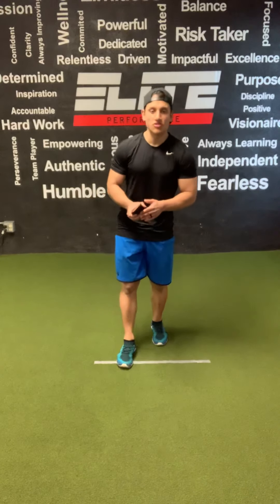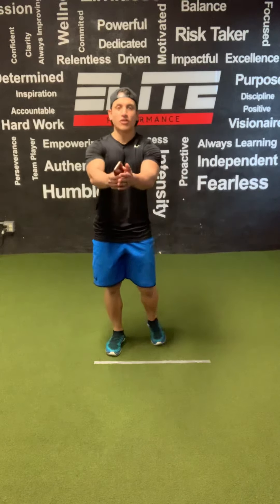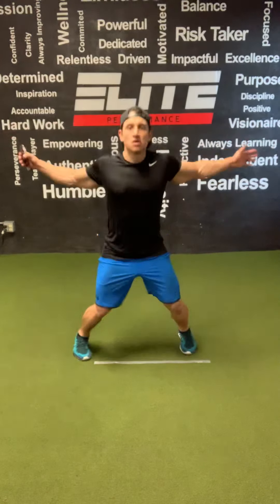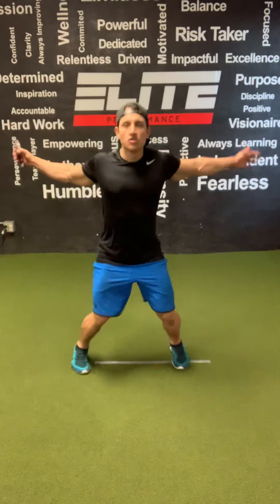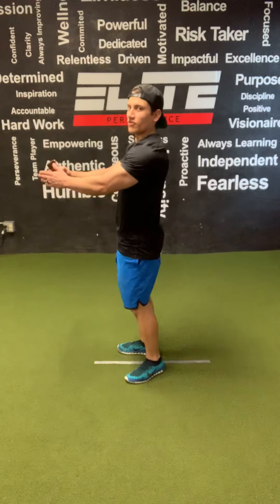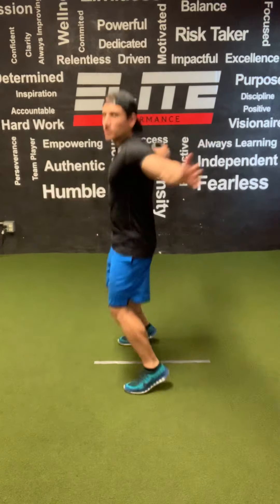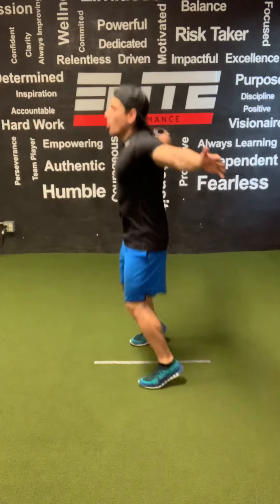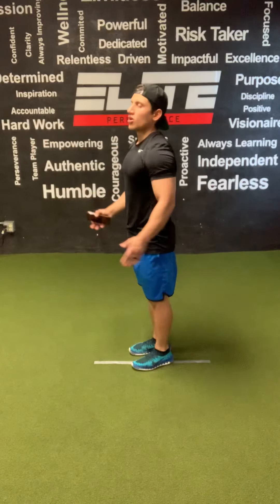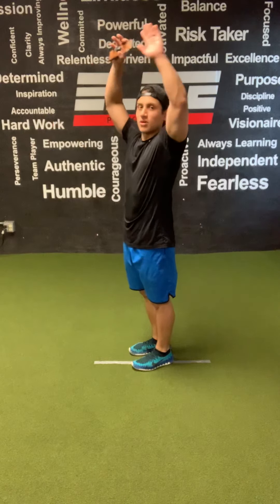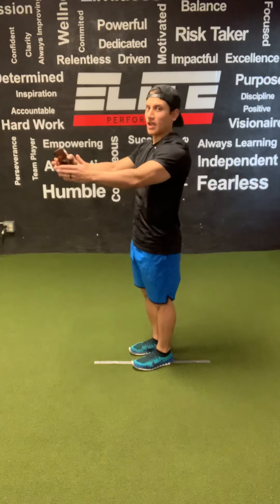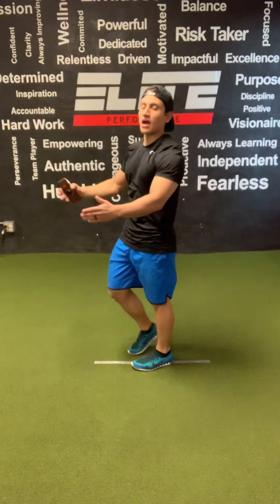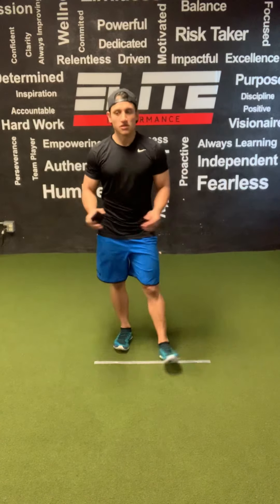First one, we're going to go into seal jacks. Hands together up here, out squeeze. As you can see from the side, out squeezing your back, opening up those arms — similar to a jumping jack, but now your hands are going out laterally.